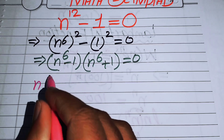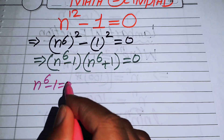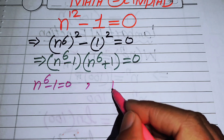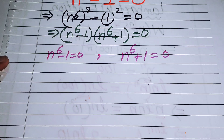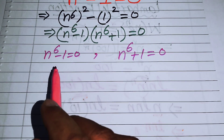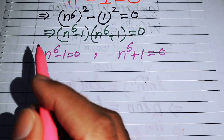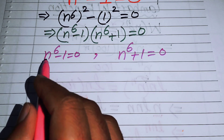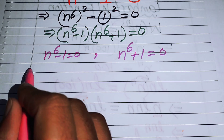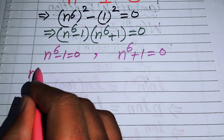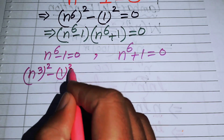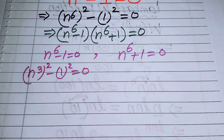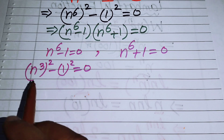So in the next step we have two cases. Our first case is n to the power of 6 minus 1 equals 0, and our second case is n to the power of 6 plus 1 equals 0. Now solving the first case, we again write n to the power of 6 as n cubed squared minus 1 squared equals 0.